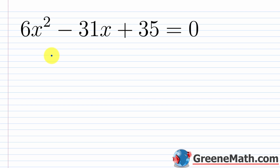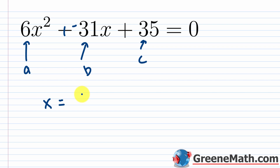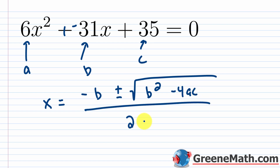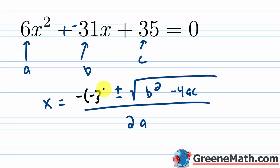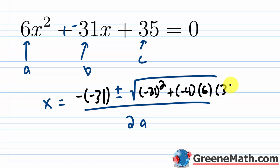The last method is the quadratic formula — probably the easiest here. Identify a = 6, b = −31 (the coefficient of x, take the sign with it), and c = 35. Plug in: x = −b ± √(b² − 4ac) / 2a. Be very careful — this is the negative of b, and b is negative 31, so this is the negative of negative 31, not just negative 31.